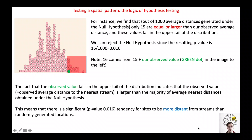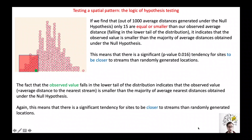Besides the p-value, we may want to focus on which tail of the distribution our observed measure falls in. If it falls in the upper tail, it indicates that our measure is larger than the majority of the average distances generated under the null hypothesis — a significant tendency of our sites to be more distant from the water streams than expected under the null hypothesis. If it falls in the lower tail, this indicates a significant tendency of our sites to be closer to the water streams than expected under the null hypothesis.